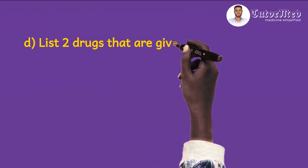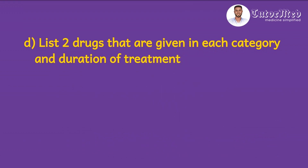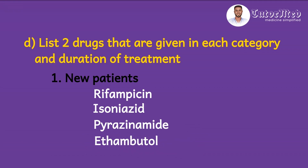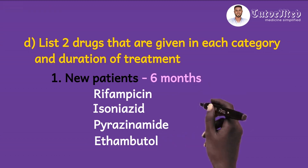The last question reads: list two drugs given in each category and the duration of treatment. For the first category — new patients, which are category 1 and 3 — the drugs given are rifampicin, isoniazid, pyrazinamide, and ethambutol. These four drugs can be remembered with the acronym RIPE. The duration of treatment for new patients is six months. So we can write any two of these four drugs, and the duration is six months — for example, rifampicin and isoniazid for six months.